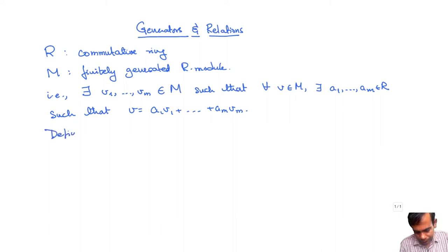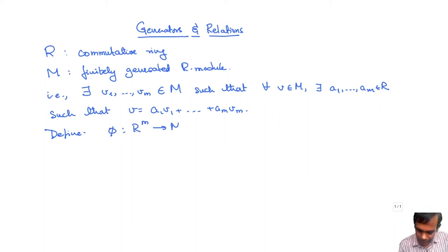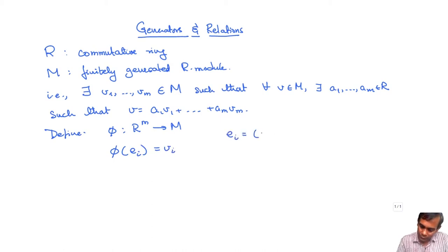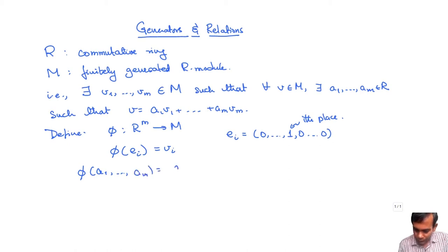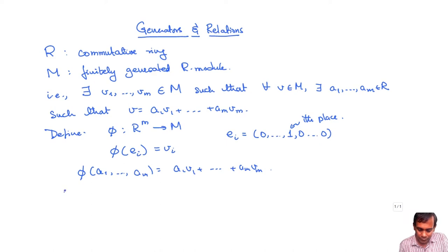Now, if you define a homomorphism phi from R^m to M by saying that phi of Ei equals Vi, where Ei is the i-th coordinate vector in R^m — the vector with all zeros except a 1 in the i-th place — then phi of (A1, A2, ..., Am) is going to be A1*V1 plus ... plus Am*Vm, because phi is an R-module homomorphism. So we conclude that phi is surjective.